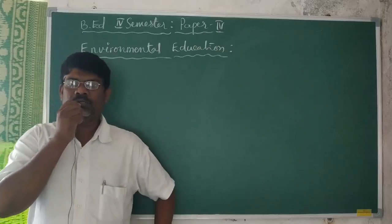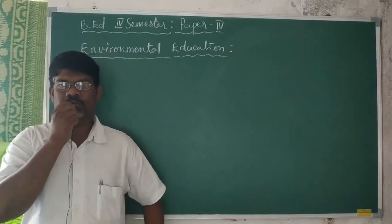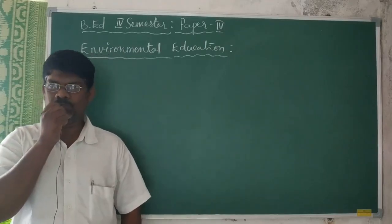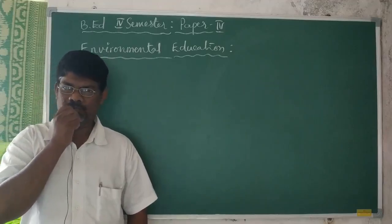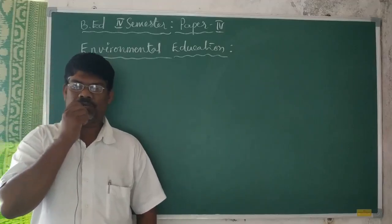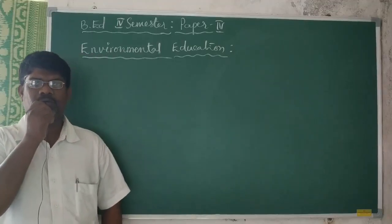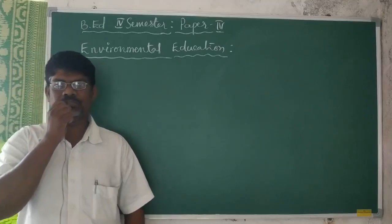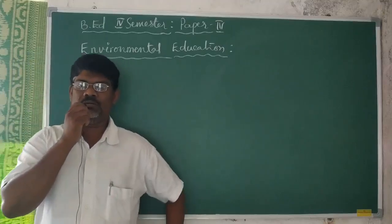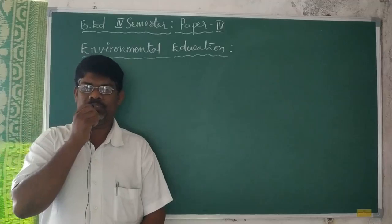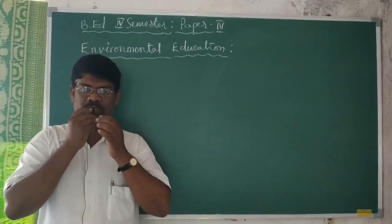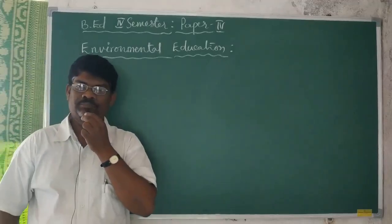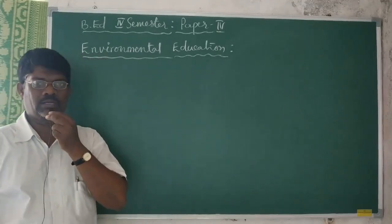Today, we will start the second chapter, which covers the meaning, importance, objectives and aims of environmental education, and also the main components of environmental education, environmental degradation, and different other topics in the second chapter. In this class, we will discuss about the meaning and objectives of environmental education.